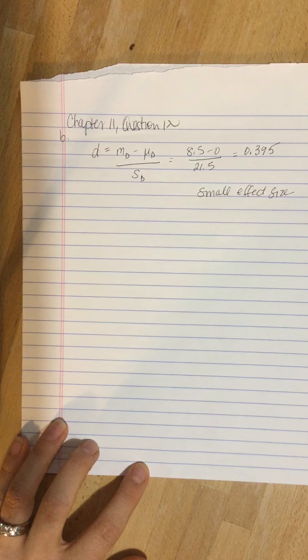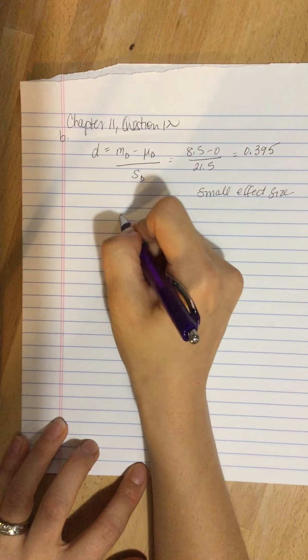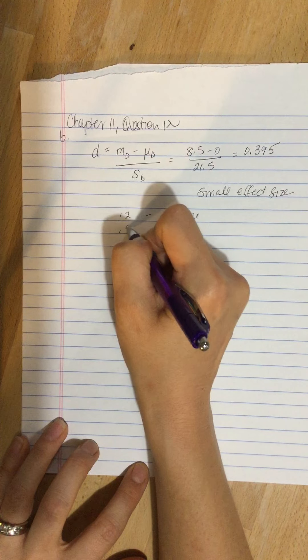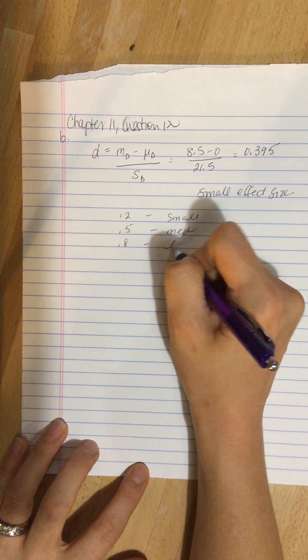Alternatively, you may see it described as a small to medium effect size. Small is 0.2, medium is 0.5, and I think 0.8 and larger is large.